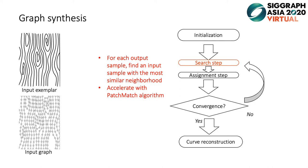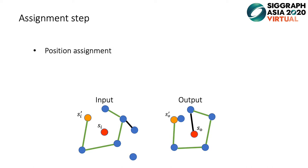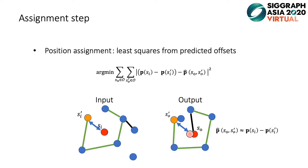In the search step, for each output sample, we find the input sample with the most similar neighborhood. This process can be accelerated by the patch-match algorithm. The assignment step includes position assignments that compute sample positions. The expected distance between two output samples should be equal to the distance between matched input samples. By taking all such input-output pairs into account, the output sample positions are optimized with least squares from predicted offsets.